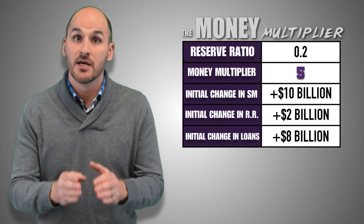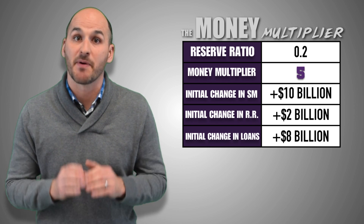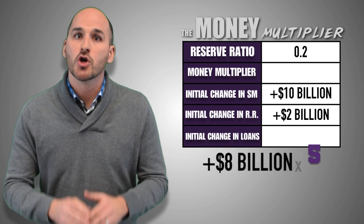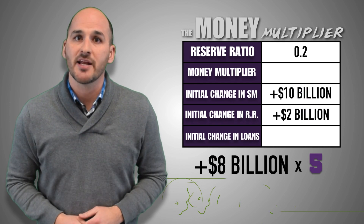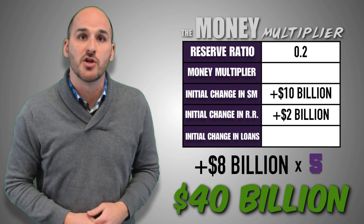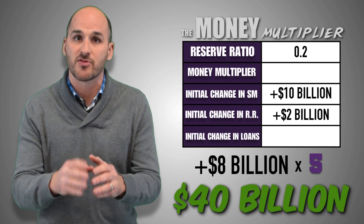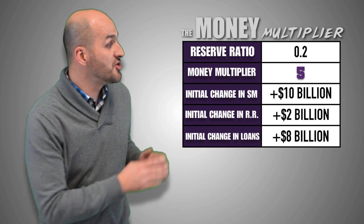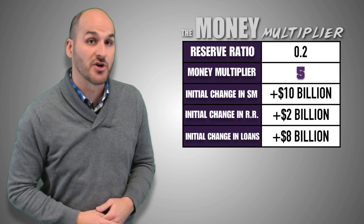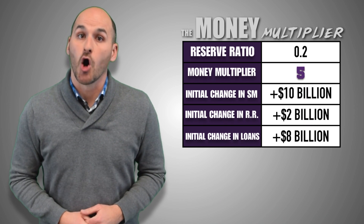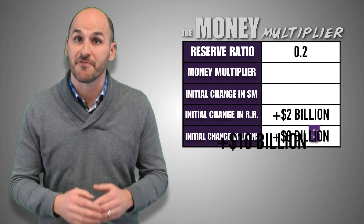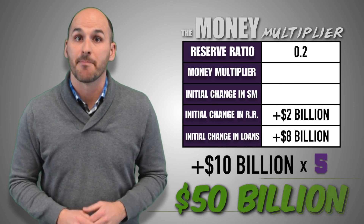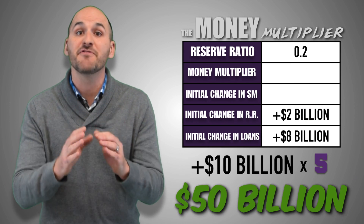Ultimately, the $10 billion demand deposits by investors who sold their T-bonds to the Fed could potentially create up to $40 billion in new money throughout the banking system. Combined with the initial money injection of $10 billion, the purchase of bonds on the open market by the Federal Reserve could potentially increase the money supply by as much as $50 billion.